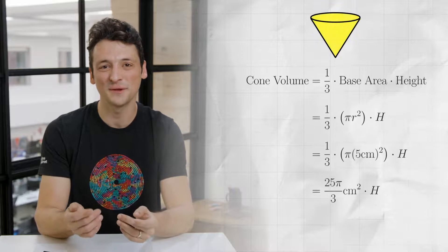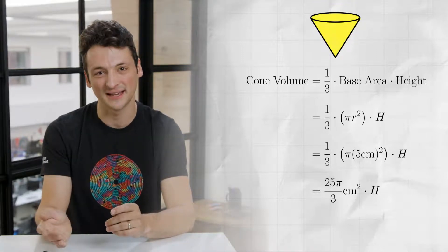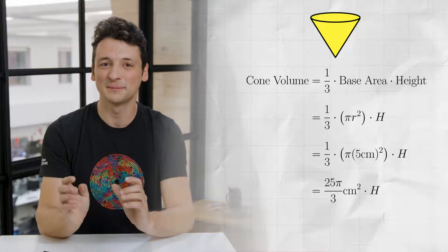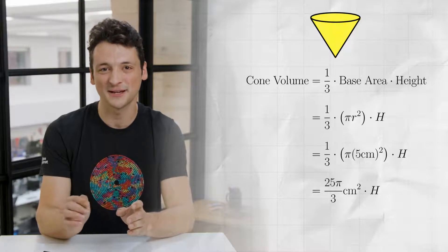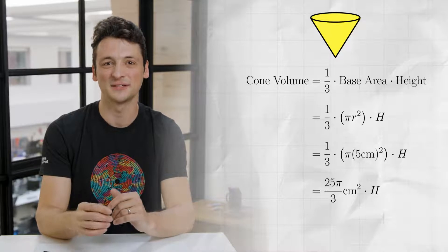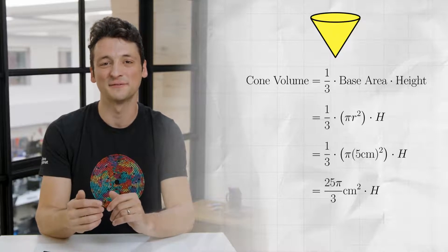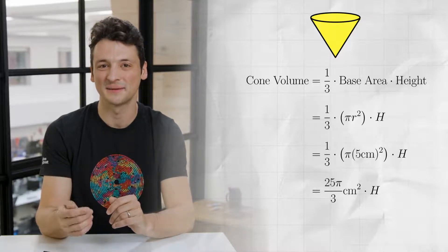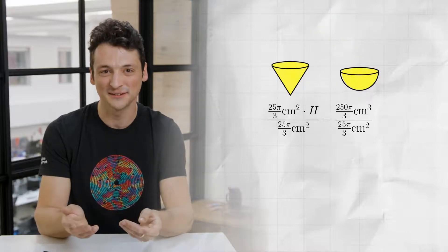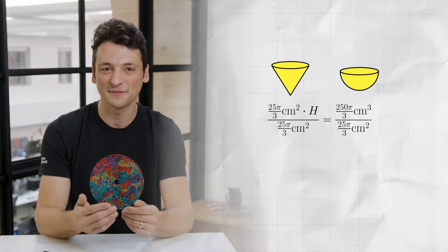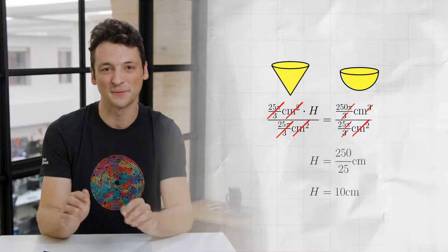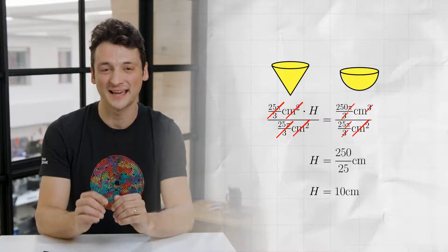A cone's volume is one-third the base area times the height. The height is what we're trying to solve for. We can plug in the base area of pi r squared and plug in 5cm for the radius again to get 25 pi over 3 cm squared times the height. Now setting these two volumes equal to each other, we can divide by 25 pi over 3 cm squared from both sides to get the height is 10cm.